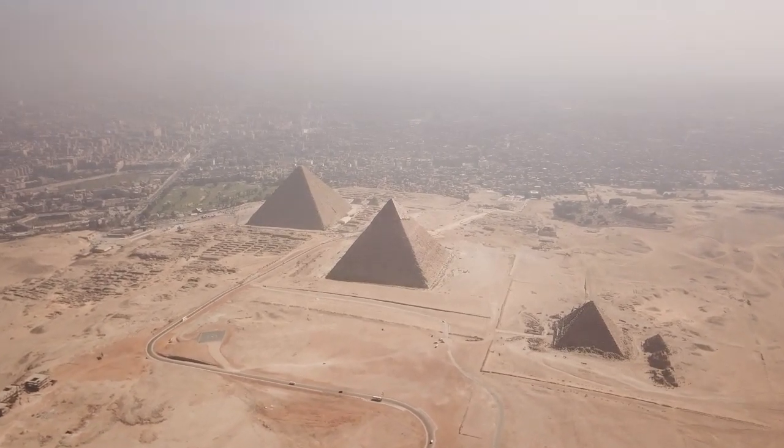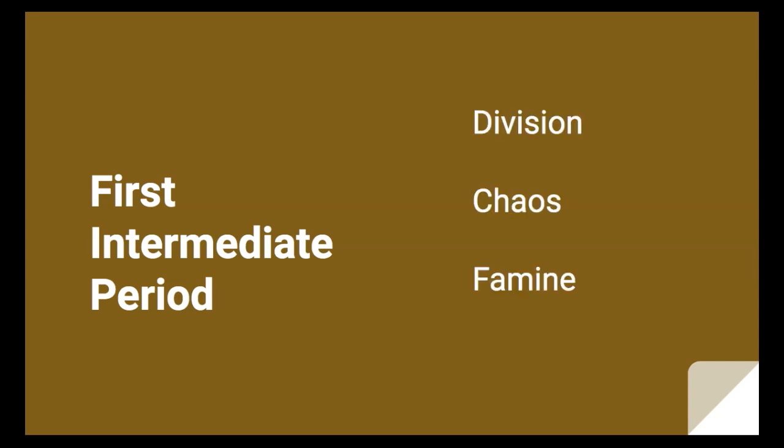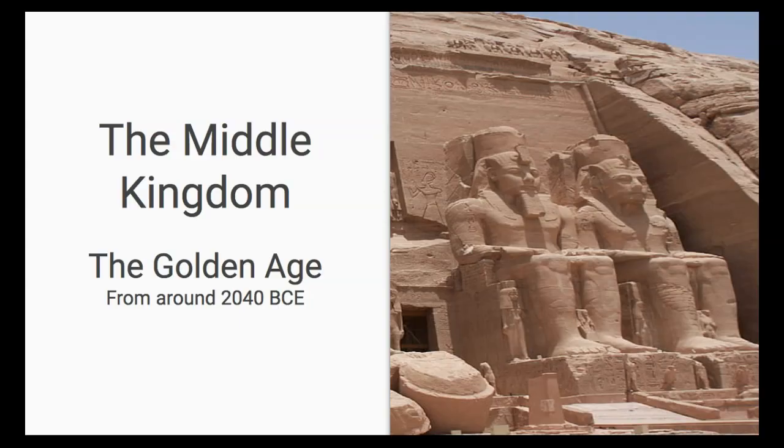The Old Kingdom came to an end with the beginning of the First Intermediate Period, which began around 2150 BCE. This was a time of complete chaos — Upper and Lower Egypt were once again divided, ruled by different dynasties. There was widespread instability and famine lasting for over a century, until the beginning of the Middle Kingdom around 2040 BCE.